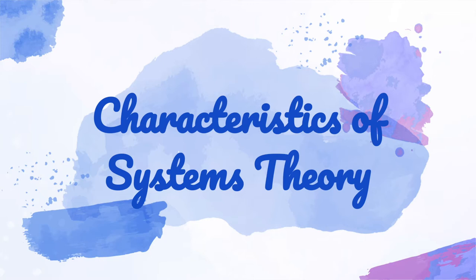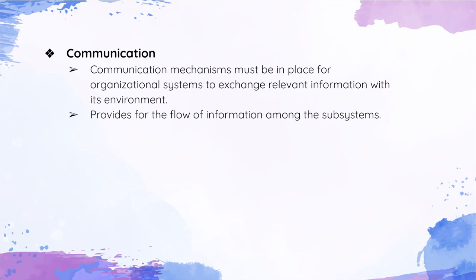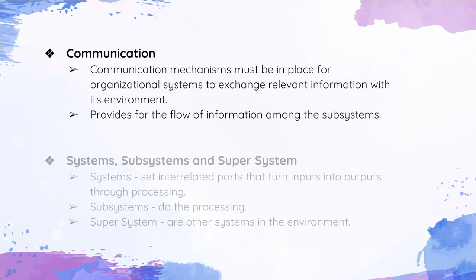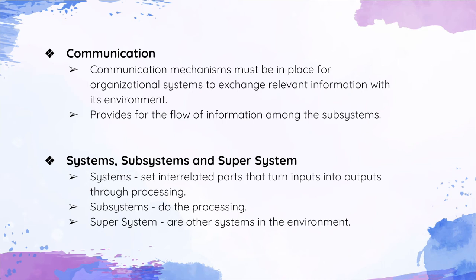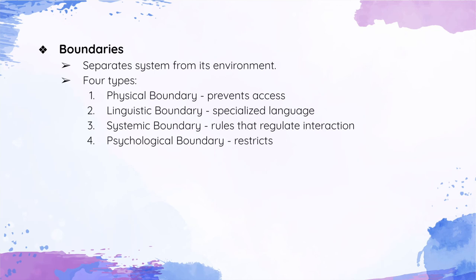Characteristics of the theory. First, communication: communication mechanisms must be in place for organizational systems to exchange relevant information with the environment, and it provides for the flow of information among the subsystems. Second, systems, subsystems, and supersystems: systems are sets of related parts that turn inputs into outputs through processing; subsystems do the processing of objectives within an organization; supersystems are other systems and the environment on which the survival of the focal system is dependent. Third, boundaries — the part of the system that separates it from its environment. There are four types of boundaries: physical boundary, which prevents access; linguistic boundary, which is specialized language; systemic boundary, which are rules that regulate interaction; and psychological boundary, which is anything that marks a limit or restricts.